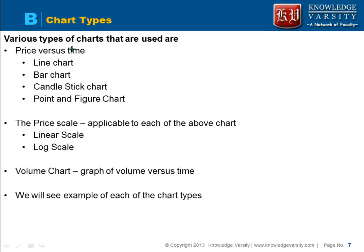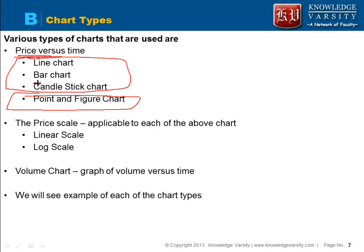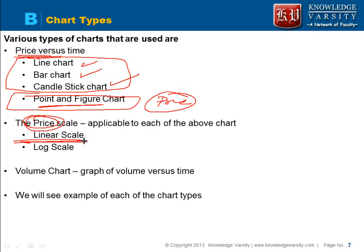There are different types of charts we use. For price versus time charts, there are three types: line chart, bar chart, and candlestick chart. Then there is the point and figure chart, which shows only price and not time. The price scale can be of two types: a linear scale where price movement is linear, or a log scale. Since stock prices follow log-normal distribution, the log scale may be more useful. There is also a volume chart, which plots volume versus time.